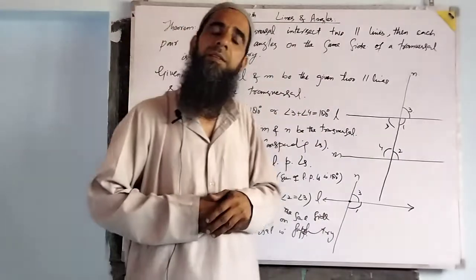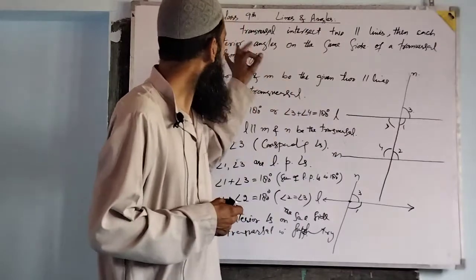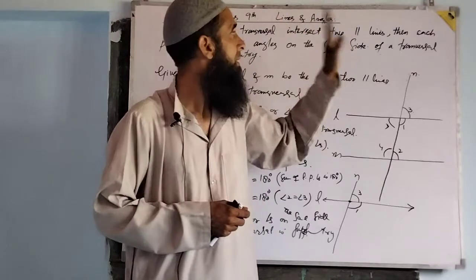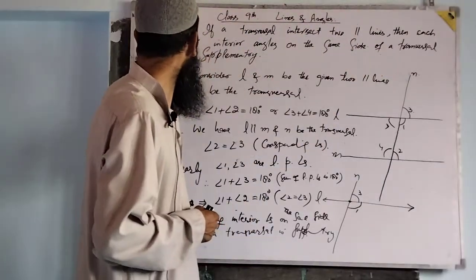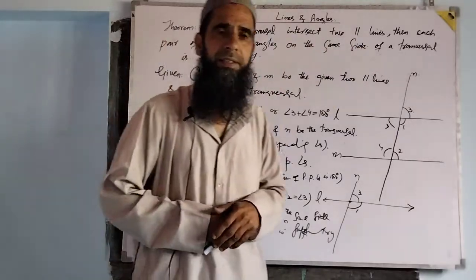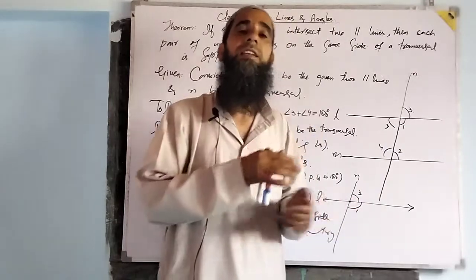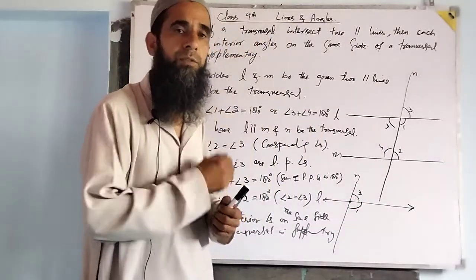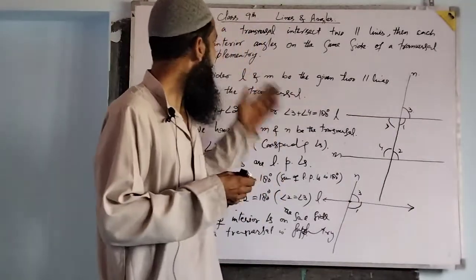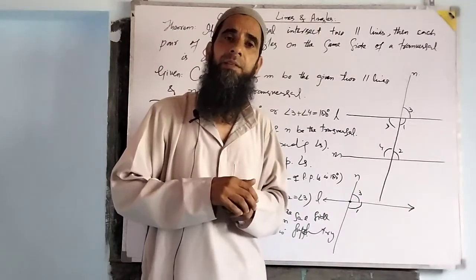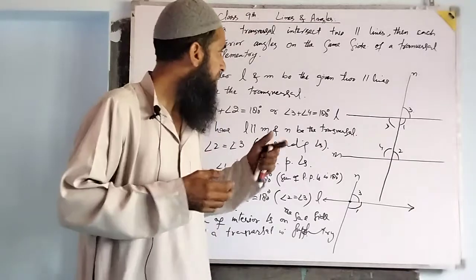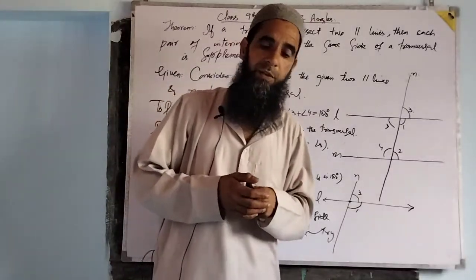Dear students, I will leave you a home assignment. The third theorem is: if a transversal intersects two lines such that the interior angles on the same side of the transversal are supplementary, then the given condition tells us we have to show the lines are parallel. This is the converse. Dear students, this is your home assignment. If you have any problem, use the comment box. Thank you, have a nice day.